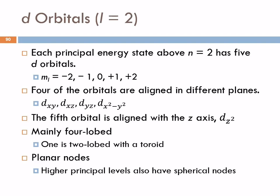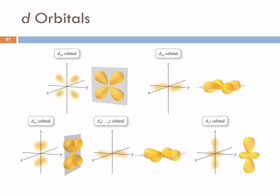In the d orbitals, we have five possible values of m sub l, and so we have five different d orbitals. These vary in orientation — four of them are aligned in different planes, and then the fifth one is aligned with the z-axis. Most of these are four-lobed. One of them is just bizarre — it's two lobes with a toroid, like it got a floaty around its waist. And these have planar nodes. Things are just getting weirder.